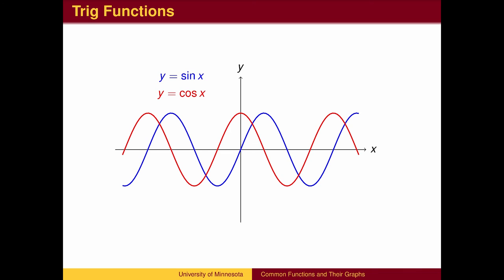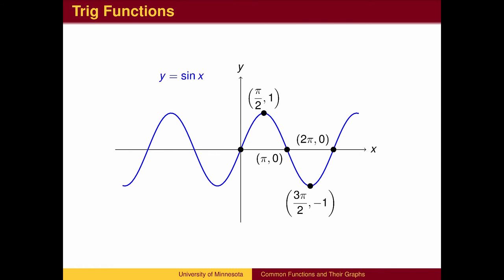The two wave functions y equals sine of x and y equals cosine of x are periodic with period 2 pi. They both have maximum values of 1 and minimum values of negative 1. The sine wave passes through the origin, reaches its maximum value of 1 at x equals pi over 2, returns to 0 at x equals pi, reaches its minimum of negative 1 at x equals 3 pi over 2, and returns to 0 at 2 pi. The sine wave then repeats one wave every 2 pi.